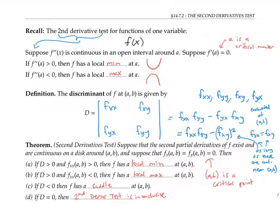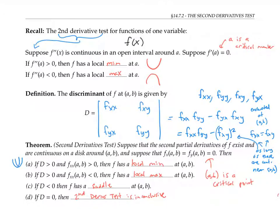Although I won't prove the second derivatives test in this video, I do want to talk about why it's plausible. Suppose the discriminant is positive and f_xx is greater than zero. If f_xx is positive and the whole discriminant is positive, then f_yy will have to be positive also, since otherwise we'd end up with a negative discriminant. f_xx being positive is like saying our function is concave up as we go in the x direction, and f_yy being positive is like saying it's concave up when we go in the y direction. So it's plausible that our function is concave up in every direction and has a local minimum.